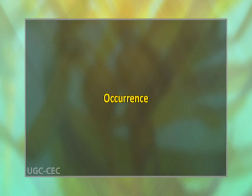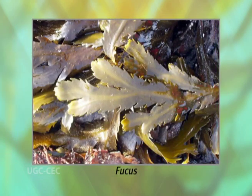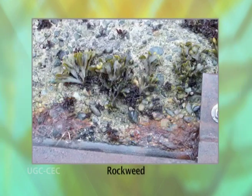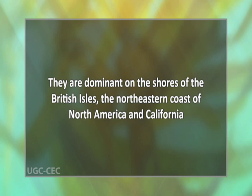Fucus is a common marine alga containing a number of species that are widely distributed on the sea coasts of temperate and arctic regions. Most species are found attached to rocks between low and high tide marks and are commonly known as rockweeds. The species of Fucus are recorded almost worldwide. They are dominant on the shores of the British Isles, the northeastern coast of North America, and California. The distribution of seaweeds mainly depends on abiotic factors, the most important being temperature, availability of hard bottom substrate, and salinity.